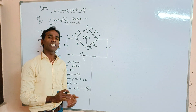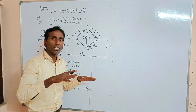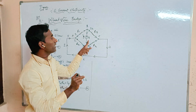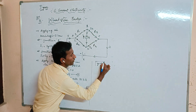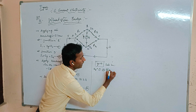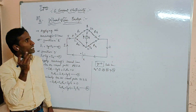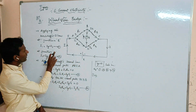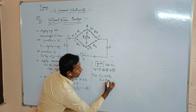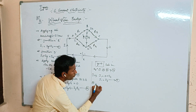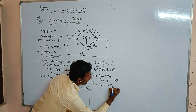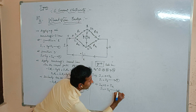For the Wheatstone bridge, when it is balanced, the galvanometer shows null deflection. At that point the galvanometer current IG = 0. Substituting IG = 0 into equation 1: I1 = 0 + I3, so I1 = I3 — equation 5. From equation 2: I2 + 0 = I4, so I2 = I4 — equation 6.